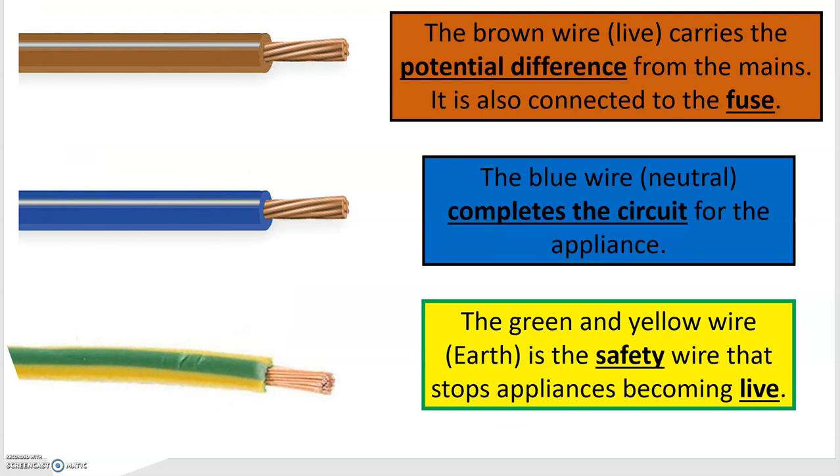First of all, if you look inside a three pin plug you will find three different colored wires. The brown wire is live, it carries the potential difference, the voltage from the mains. It is also connected to the fuse, which I'll talk about in a bit.